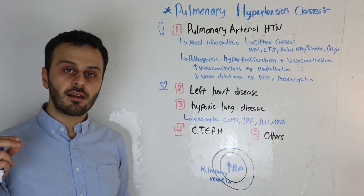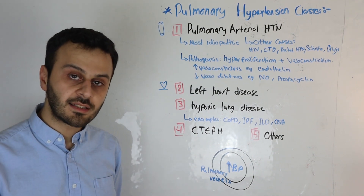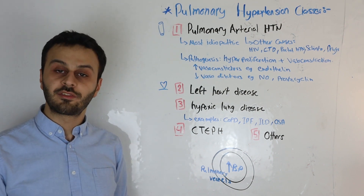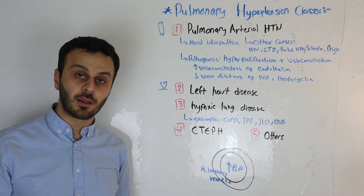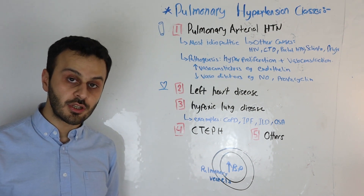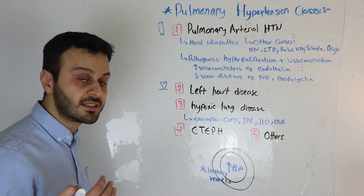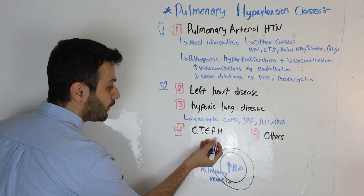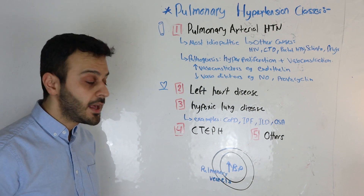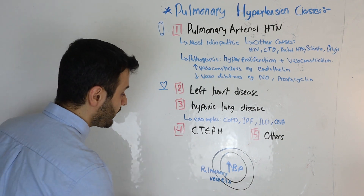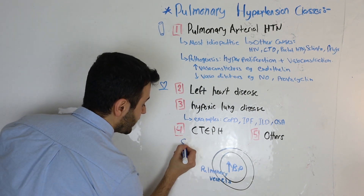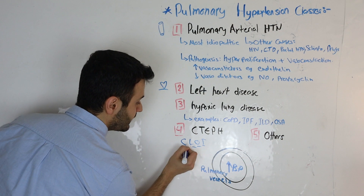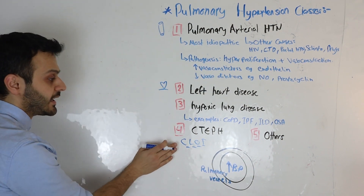Class 4 is when you have a clot within the lung vasculature. That clot, over a long period of time, will eventually lead to pulmonary hypertension — specifically something called CTEPH: chronic thromboembolic pulmonary hypertension. To remember this: the word 'clot' has four letters, so it is class number four.